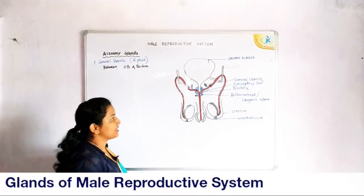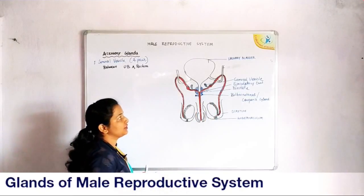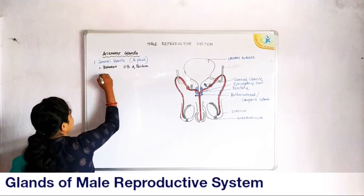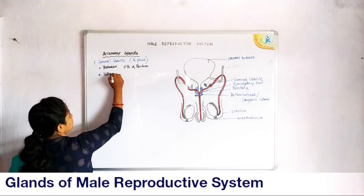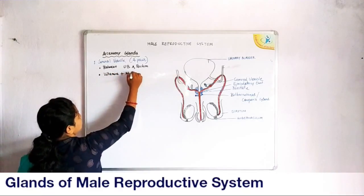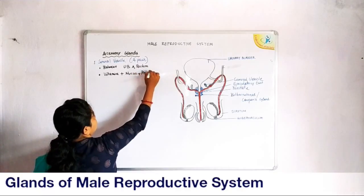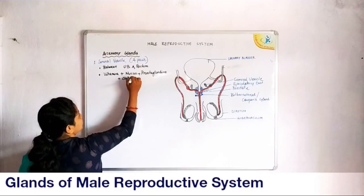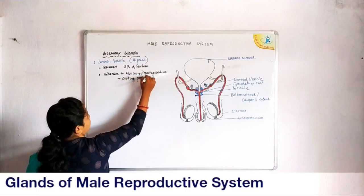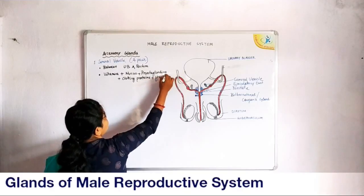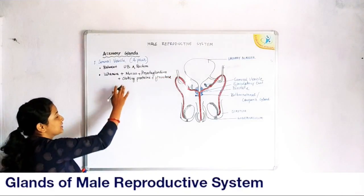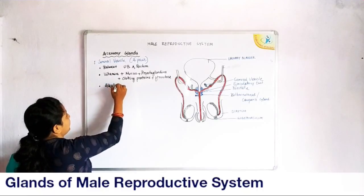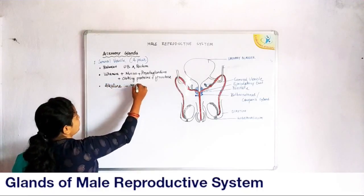The secretions coming from the seminal vesicle enter into the ejaculatory duct. The secretion of the seminal vesicle contains vitamins, mucus, prostaglandins, clotting proteins, and a special type of fructose which is not synthesized anywhere else in the body. The secretion from the seminal vesicle is slightly alkaline in nature, with a pH of nearly around 7.4 to 7.6.